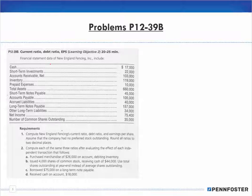So we're working on problem 39. It says 'Current Debt and Earnings Per Share.' Data number one: compute the current ratio, debt ratio, and earnings per share. Assume the company had no preferred stock outstanding. Round all ratios to two decimal places. Then compute each of the same three ratios evaluating the effect of each independent transaction that follows.